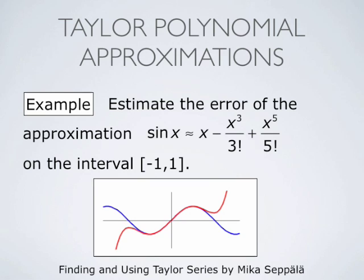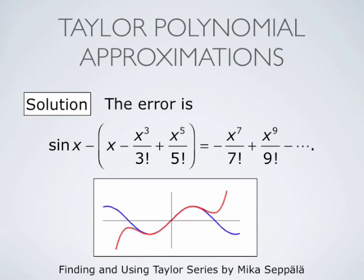In this example, we look at the sine function and its Taylor polynomial of degree 5 centered at the origin. Our task is to estimate the error of the approximation: sine of x ≈ x minus x cubed over 3 factorial plus x to the power 5 over 5 factorial, on the interval from negative 1 to 1. The error is sine(x) minus that polynomial expression. Substituting the Taylor series for sine, we obtain that the Taylor series for this error is: negative x to the 7th over 7 factorial plus x to the 9th over 9 factorial, minus and so forth.